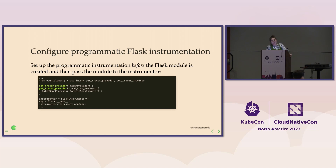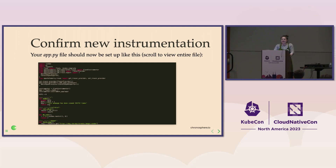The last part we need to do is set up our programmatic instrumentation. We've dropped in the config, set up a tracer, set up the provider. Now we need to say the FlaskInstrumentor needs to run and do its thing, and what we're instrumenting is our specific app instance. Go ahead and make sure this is reflected in your app.py. If you got a little bit lost or the lines didn't add up, you can copy-paste this blessed version of the file.